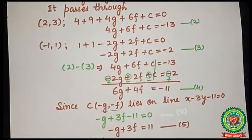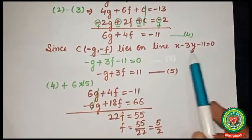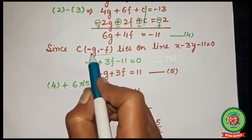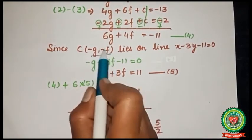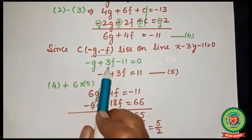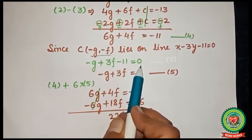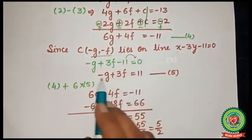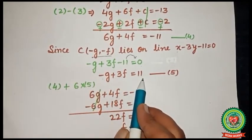The next condition is that the center lies on the line x - 3y - 11 = 0. Since the center is (-g, -f), substituting gives -g + 3f - 11 = 0, so -g + 3f = 11. Mark this equation 5.